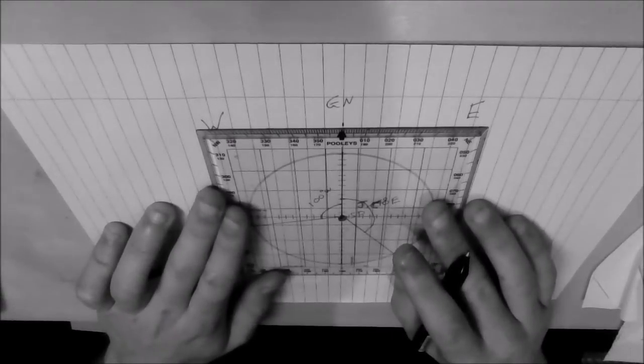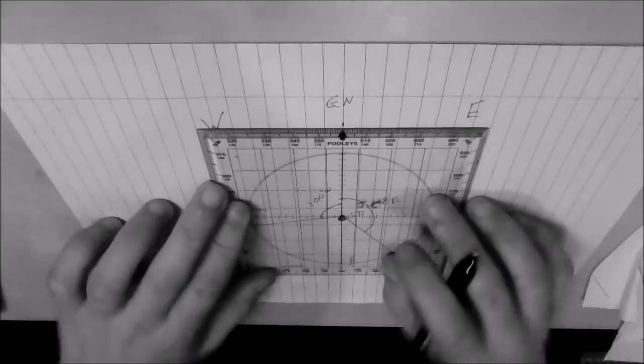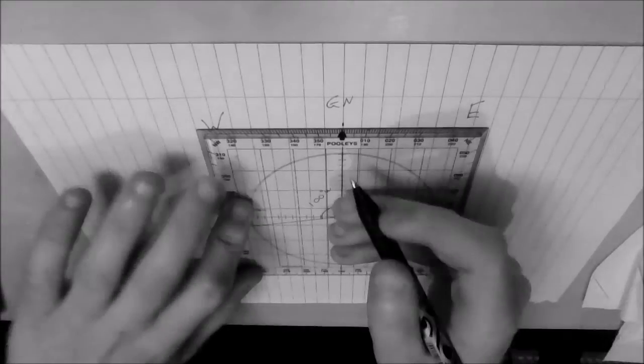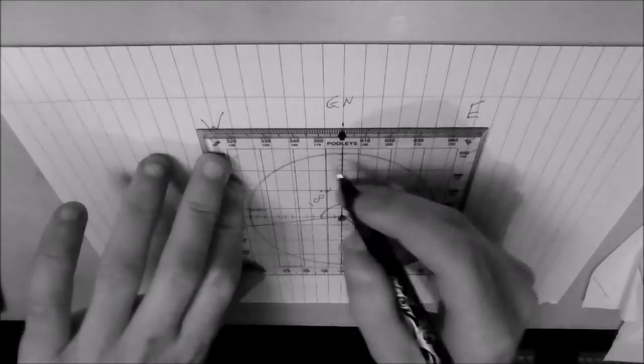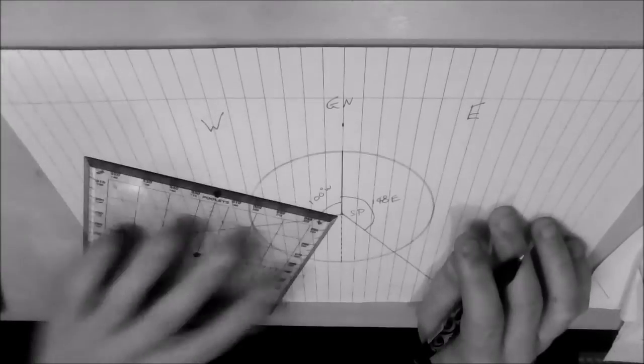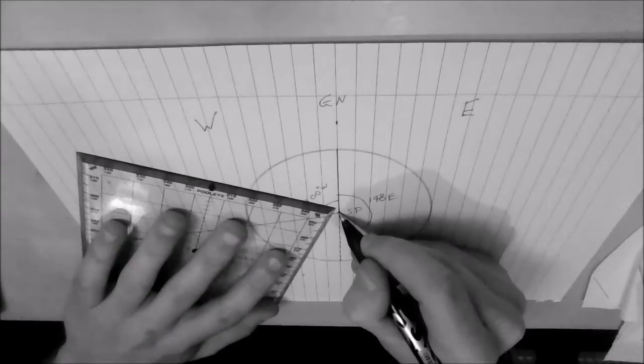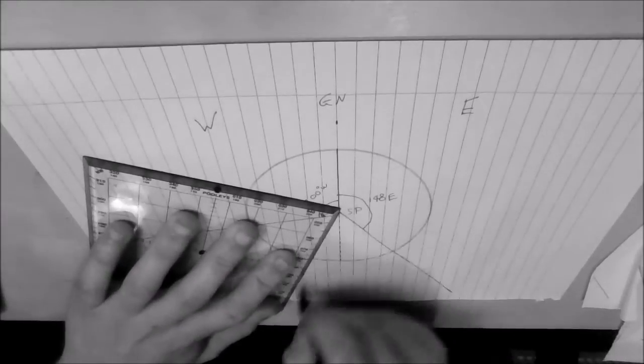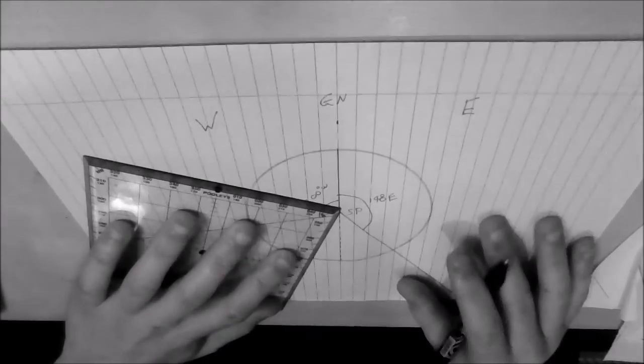So again, the center dot on the western side measured from the meridian, we've got 160 degrees, which takes us to there. Again, mark another line from the south pole through that point and out as far as possible.